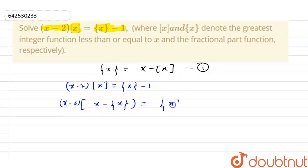And that equals to fractional part x minus 1. Now if you solve it, you will get x square minus x into fractional part x minus 2x plus 2 fractional part x equals to fractional part x minus 1.